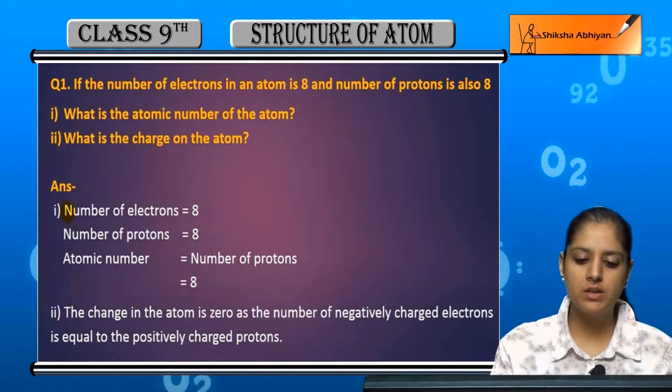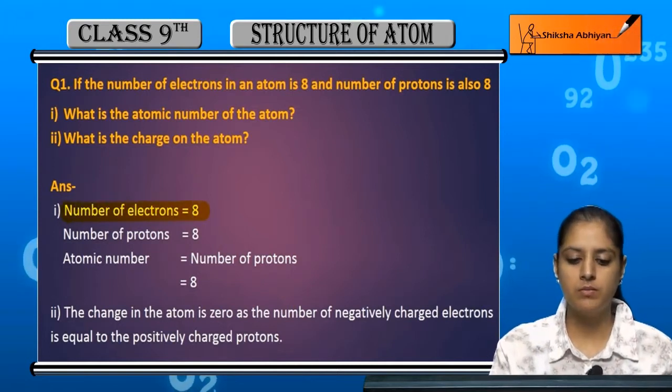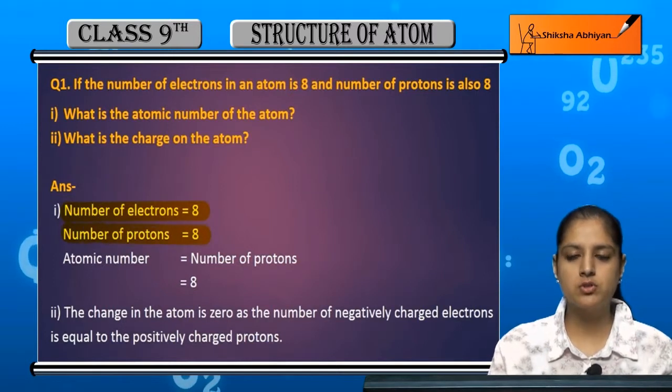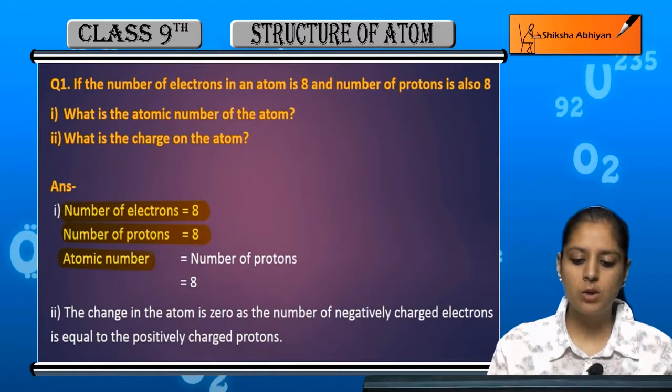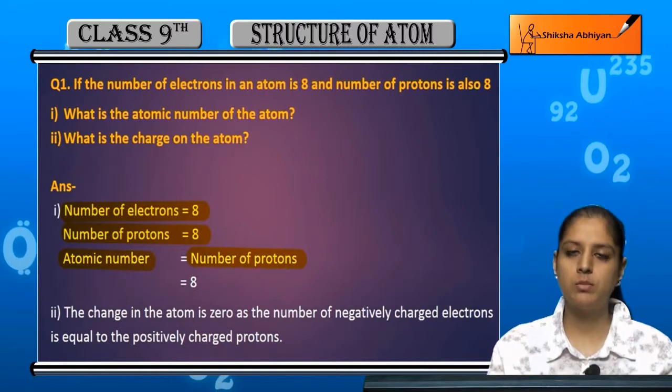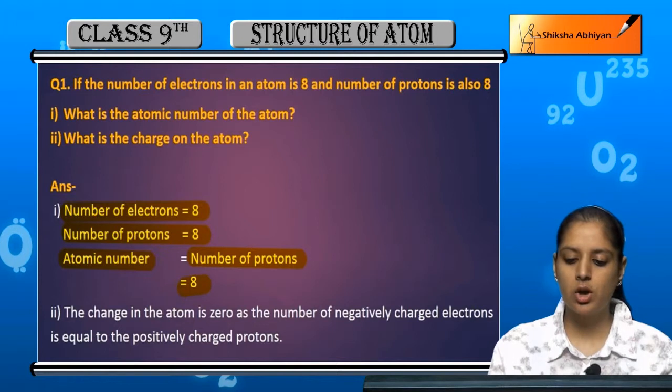If you have given that number of electrons in an atom is eight and number of protons is eight, so we have atomic number - because atomic number and number of protons is equal. So if protons are eight, the atomic number is also eight.